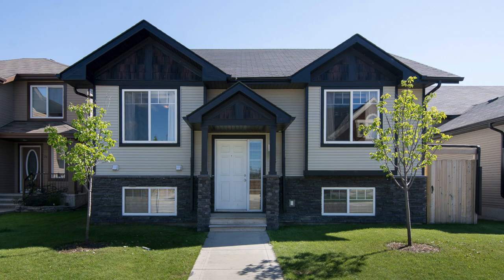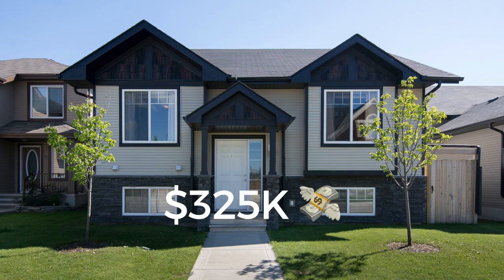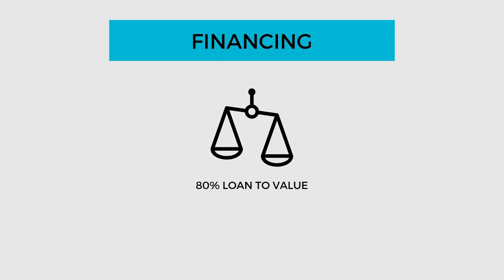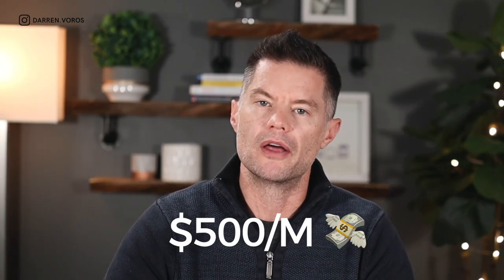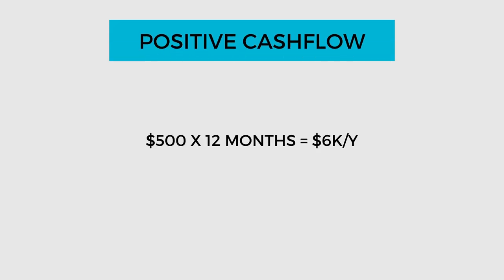Let's look at an actual property to run some basic numbers. I purchased this property for $325,000. I was able to get financing at 80% loan-to-value, so my mortgage amount was $260,000, and this property generates approximately $500 a month in positive cashflow. If I was looking to purchase this property, how would I calculate my return on investment? Positive cashflow is pretty simple: I take my $500 a month in positive cashflow, multiply that by 12 months of the year, and that gives me $6,000 in cashflow each year.